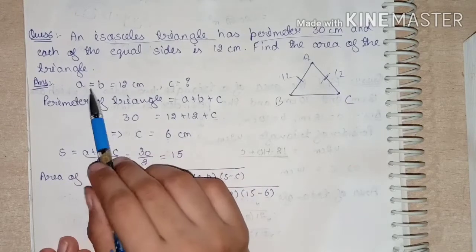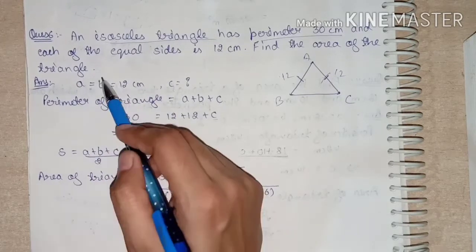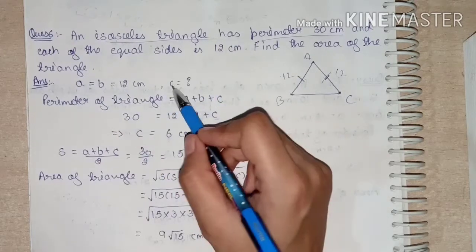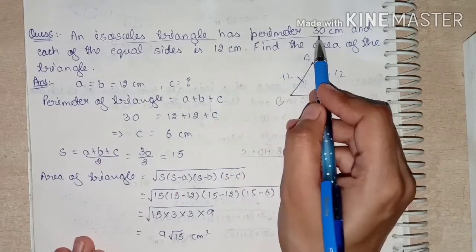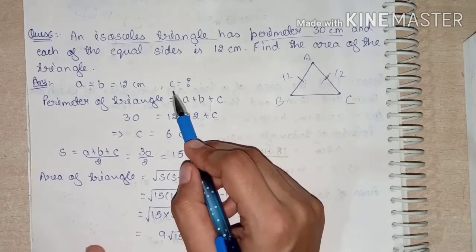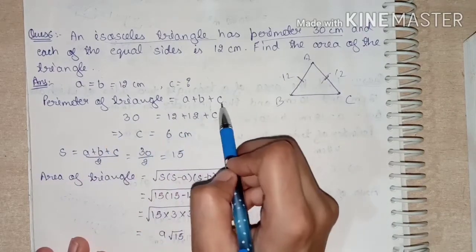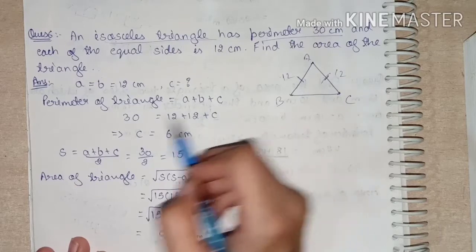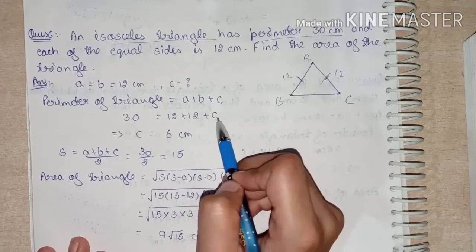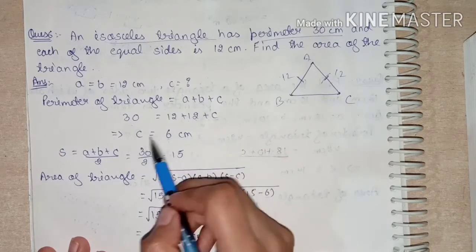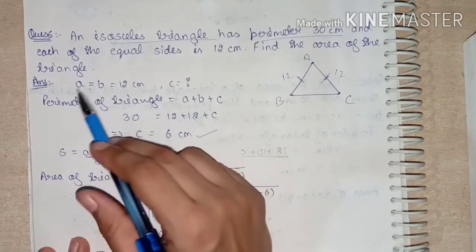So a = b = 12 cm. c is unknown, but we know the perimeter. Using perimeter formula: a + b + c = 30, so 12 + 12 + c = 30, which gives c = 30 − 24 = 6 cm. Now we have all three sides.